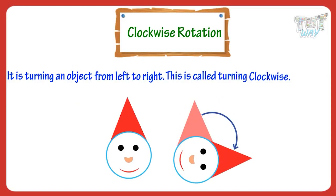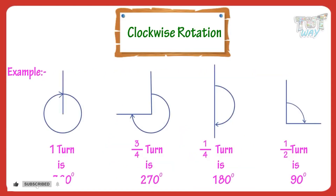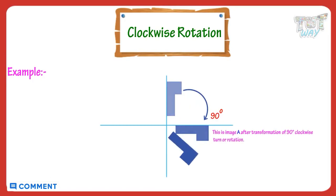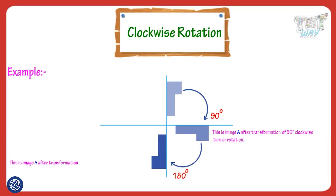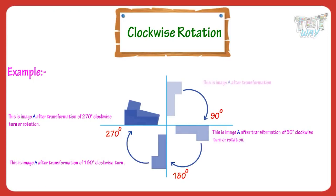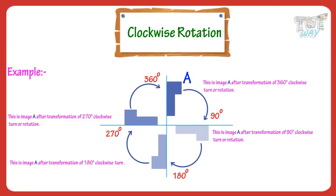Let's have a look at some examples. This is image A after a transformation of 90 degree clockwise turn or rotation. This is image A after a transformation of 180 degree clockwise turn or rotation. This is image A after a transformation of 270 degree clockwise rotation. This is image A after a transformation of 360 degree clockwise rotation. We see that on rotation of 360 degrees, we get the same image.